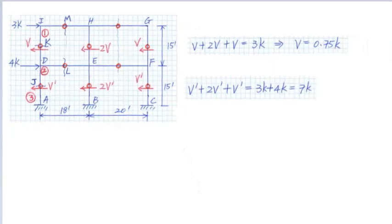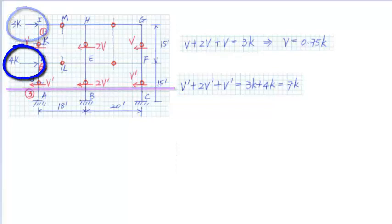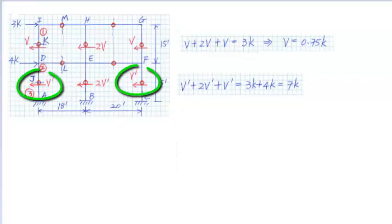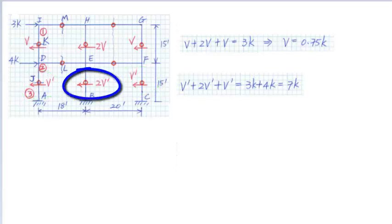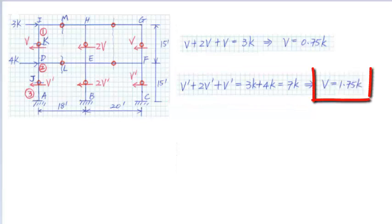At the first story level, the sum of the column lateral loads equals 3 kips plus 4 kips, equals 7 kips. The lateral load in the exterior columns DA and FC is denoted as V'. The lateral load in the interior column BE is 2V'. So we get V' plus 2V' plus V' equals 7 kips, and solving gives V' equals 1.75 kips.